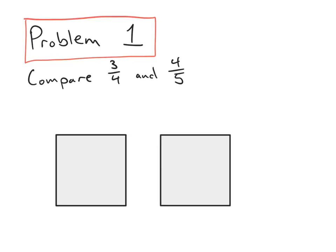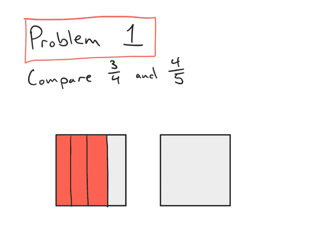I'm going to draw a couple of tape diagrams. In the first tape diagram I'm going to represent three-fourths, and I'm going to partition this vertically. I'll go ahead and fill in three-fourths in red. For the second tape diagram I'm going to represent four-fifths, and I'm going to partition that horizontally.